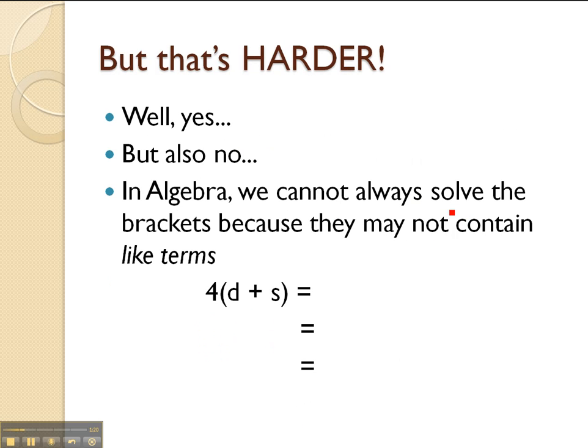But you might be asking yourself, well that second step is harder. And yes it is, it takes a few more steps. But in some ways it's actually not that much harder at all. Because in algebra we can't always solve the brackets because they may not contain what we know as like terms. And this is really important. If we had 3 and 4 we can add them together. 3 plus 4 is equal to 7.